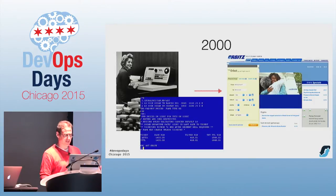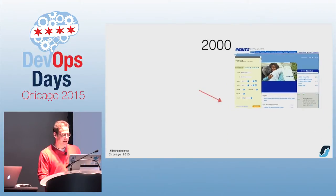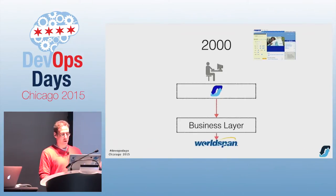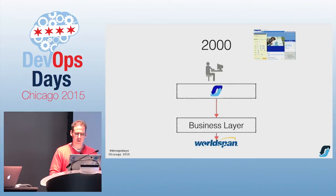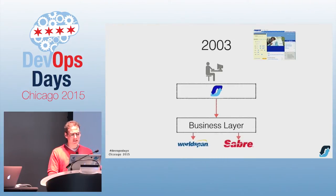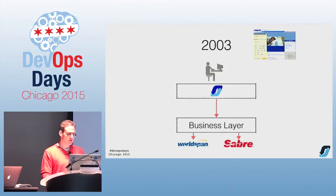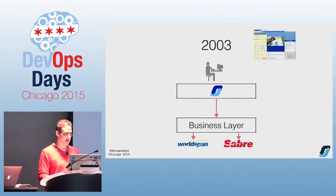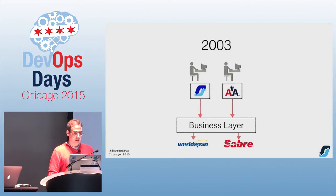Those boxes of paper tickets on the floor are gone. The system she was typing into is called the Global Distribution System or GDS. When talking about communicating with the airlines, you talk to a GDS. The first one we hooked up to was WorldSpan — they're still around. By 2003 we hooked up to our next GDS, which was Sabre. The financial incentive for creating Orbitz was that if we booked an American Airlines ticket in Sabre, it was actually cheaper for the airlines.